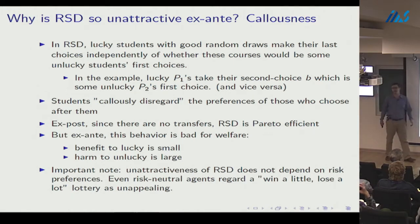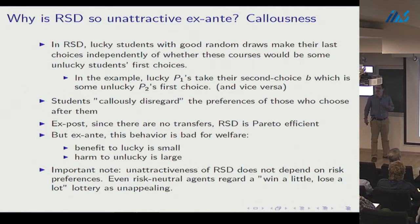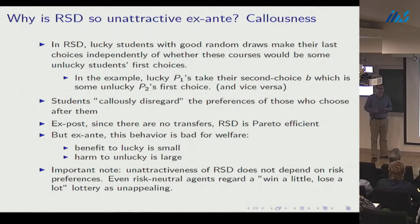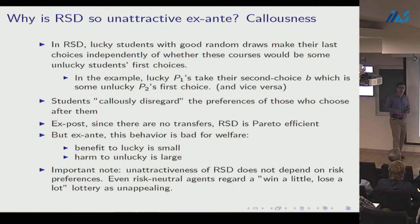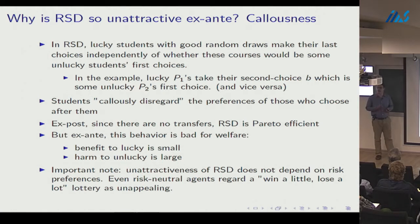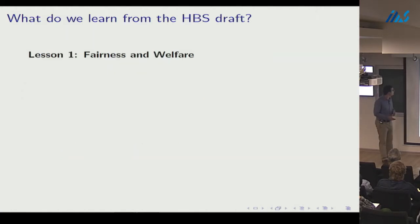The unattractiveness of random serial dictatorship doesn't actually depend on risk aversion. Even risk-neutral students will regard a 'win a little, lose a lot' lottery as unattractive — and that's precisely the kind of lottery that random serial dictatorship induces.